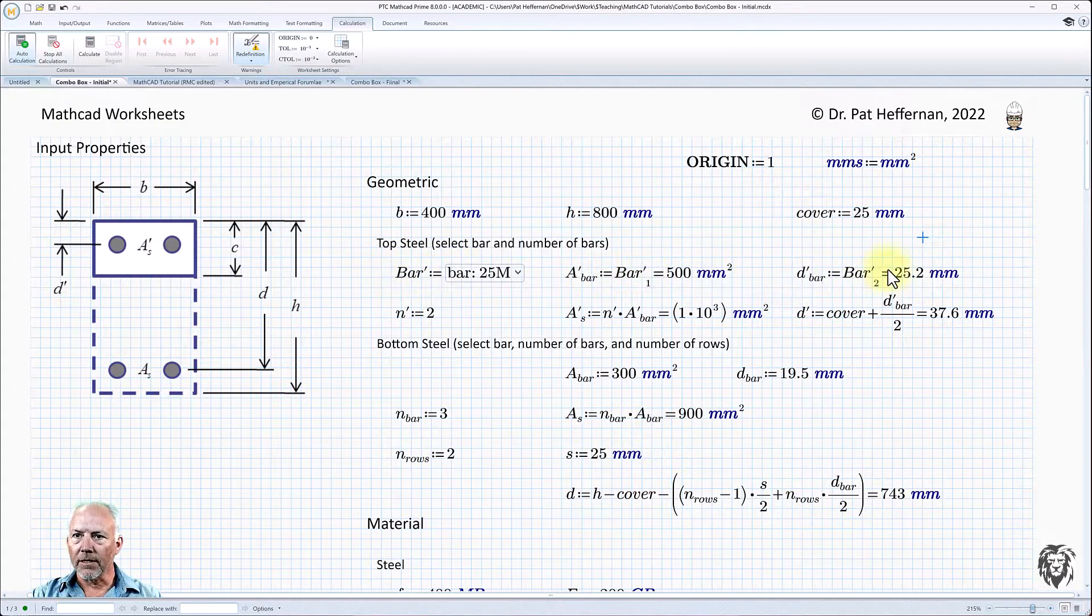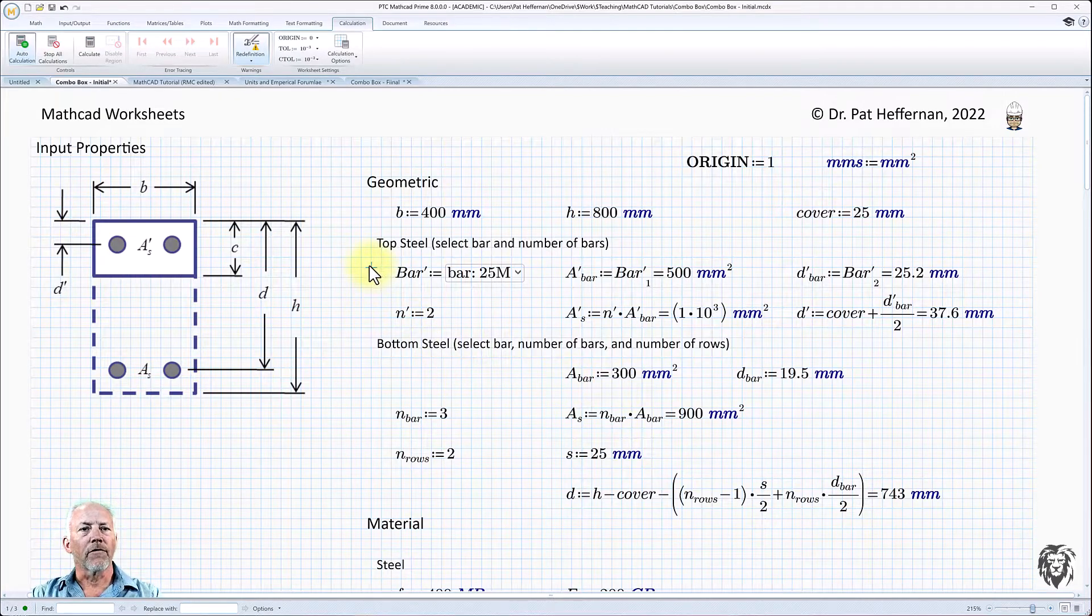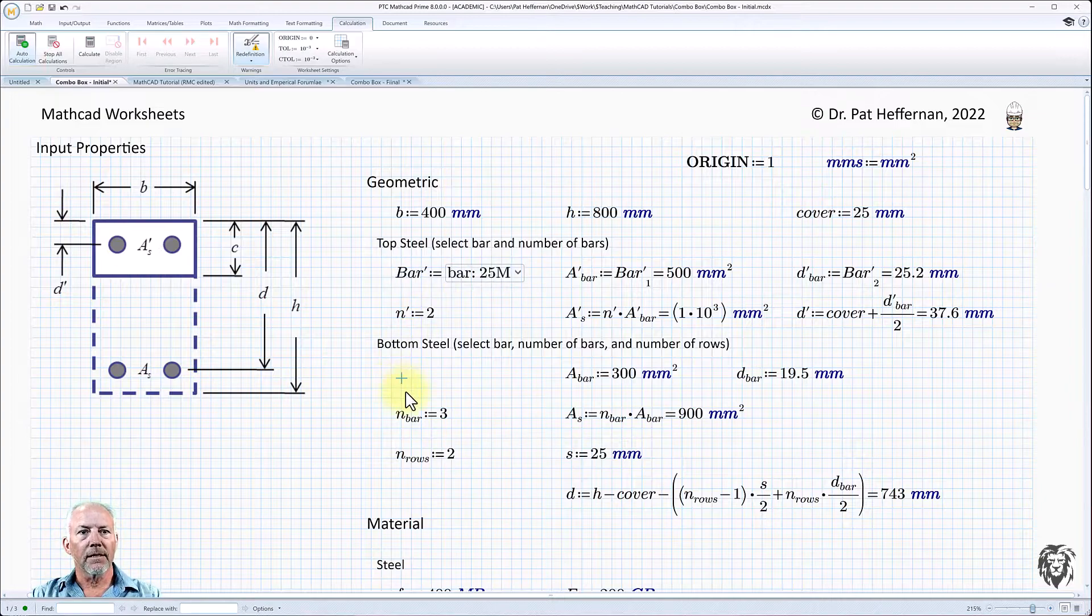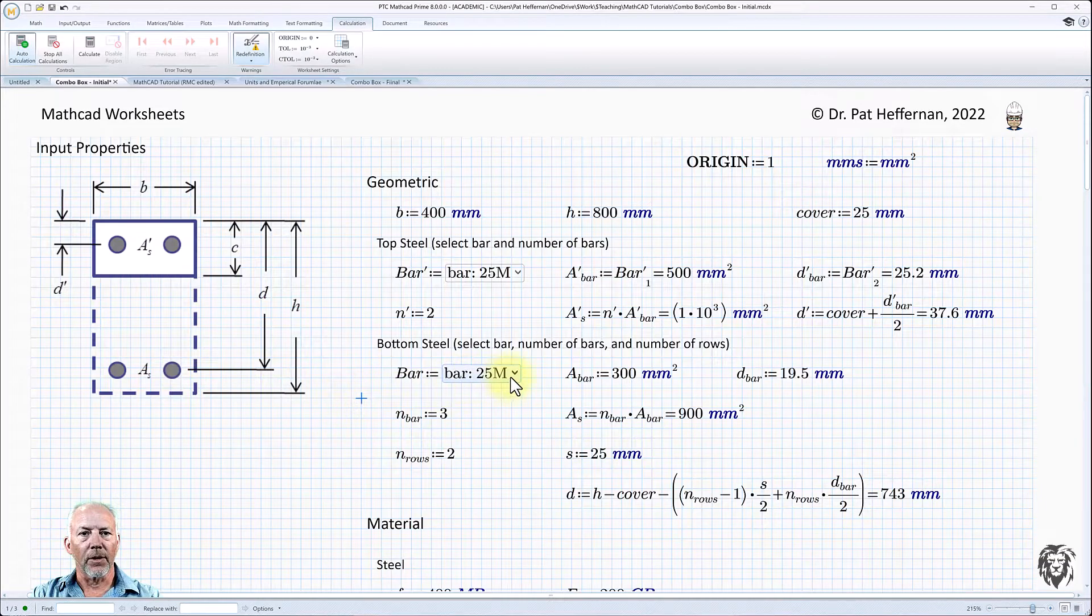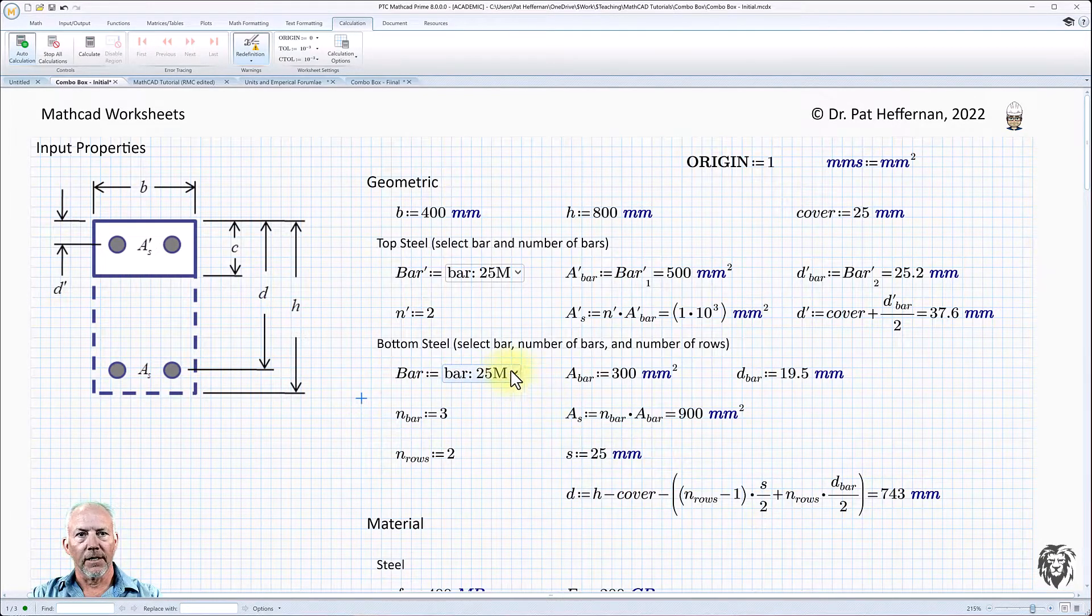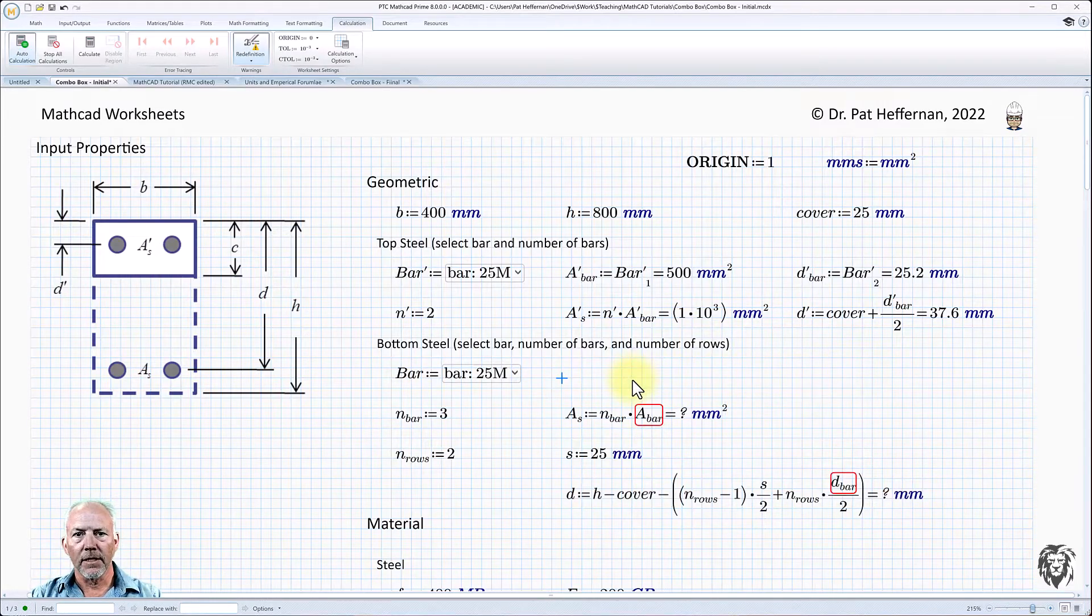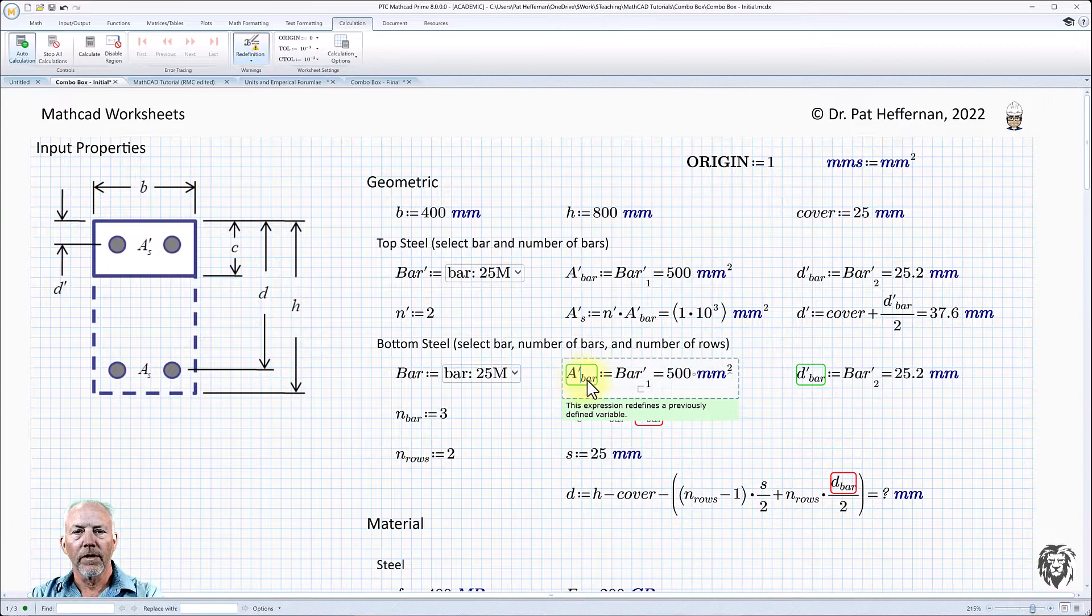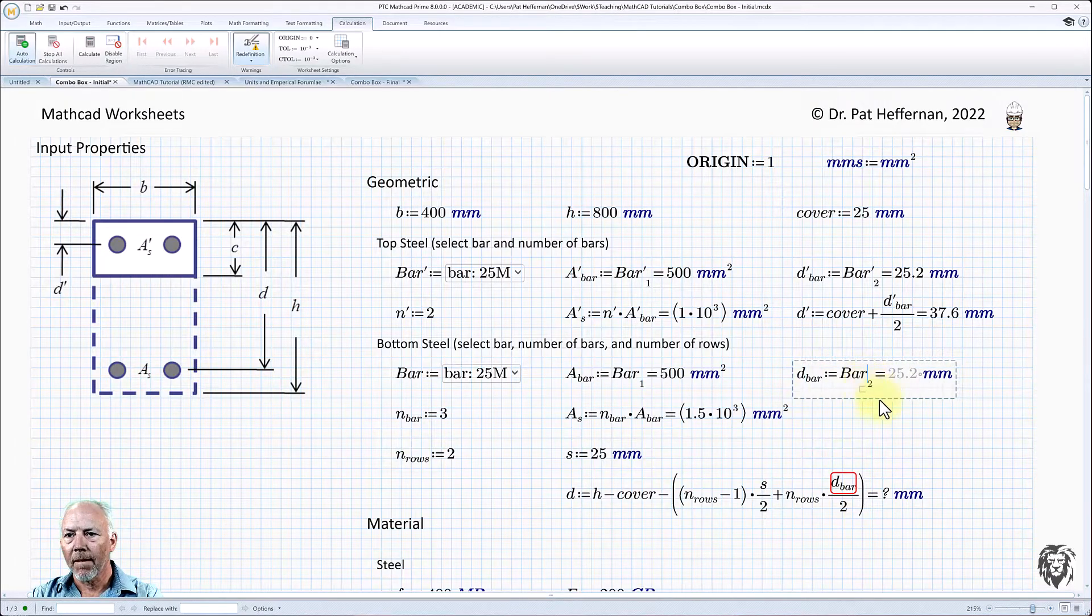All we need to do now is repeat this effort down here for the bottom steel. We'll make that really simple. So first thing I want to do is I'm going to copy and paste my combo box down here. And of course, we don't want to use bar prime. We're just going to use bar because we're down in the bottom steel. And so that's fine. Instead, probably the easiest way to do that is I'm going to copy and delete these, paste these, and just remove the prime, remove the prime.